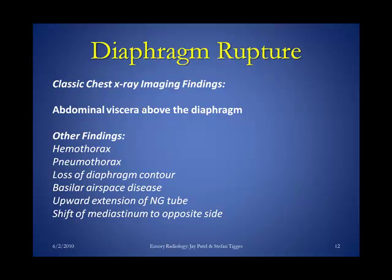Chest X-ray findings to be familiar with: the key finding is abdominal viscera above the diaphragm — air lucencies, small bowel, large bowel, or stomach above the expected diaphragmatic region. Other findings include hemothorax, pneumothorax, loss of the diaphragmatic contour, airspace disease in the lower lungs from compressed herniated contents, upward extension of an NG tube above the gastroesophageal junction, and mediastinal shift to the opposite side.